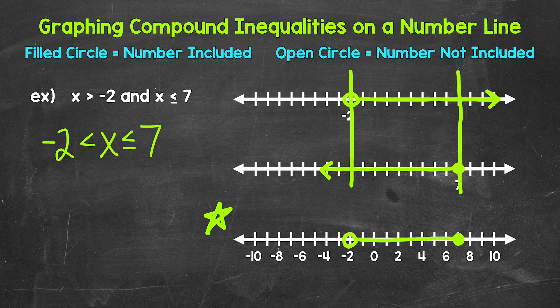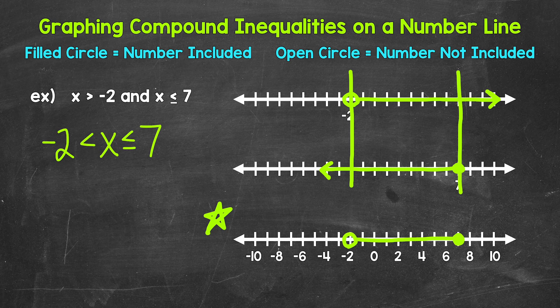As far as solutions, some numbers that will work for x: let's try a couple out. Will 3 work? Is 3 greater than negative 2 and less than or equal to 7? Yes — so 3 is a solution. How about 10? Is 10 greater than negative 2 and less than or equal to 7? Well, 10 is greater than negative 2, but 10 is not less than or equal to 7, so 10 is not a solution. Anything greater than negative 2 and less than or equal to 7 will work, and we can see that represented on the number line.